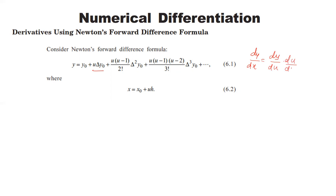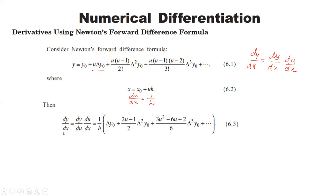We find dy/dx by writing dy/dx = (dy/du)·(du/dx). Since x = x0 + uh, we get du/dx = 1/h. So dy/dx = (1/h)·(dy/du). Now we differentiate the forward difference expansion term by term, starting with Δy0.